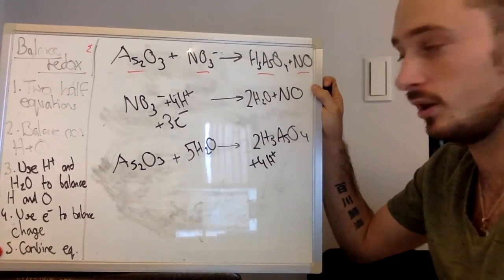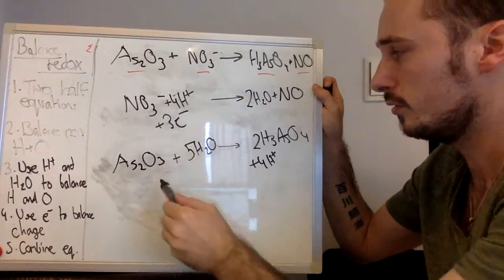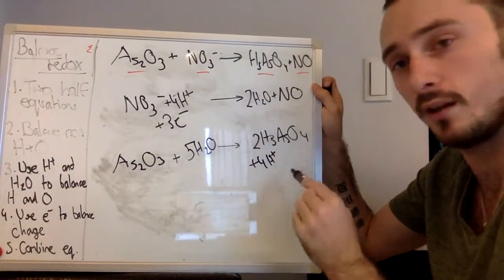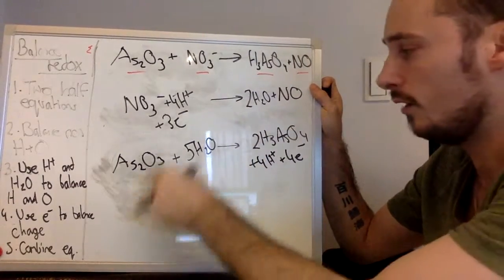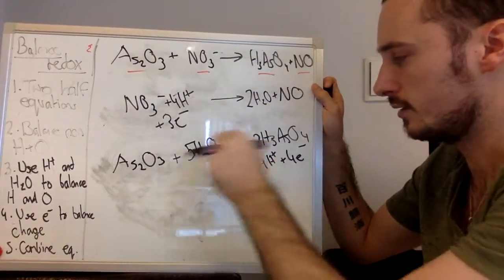Finally, we have to balance the charges. Here, we are all neutral. Here, we have four H plus. Therefore, we need to add four E minus. And now, our equations are balanced on both sides.